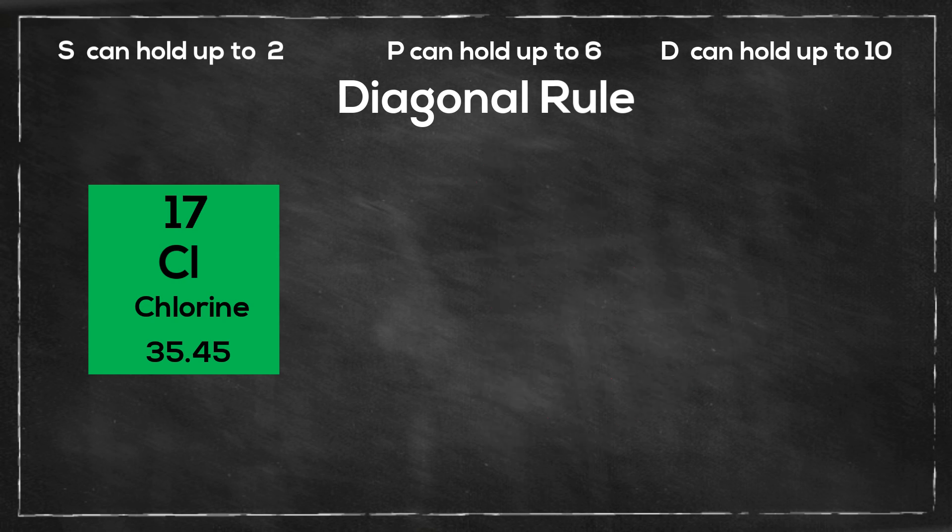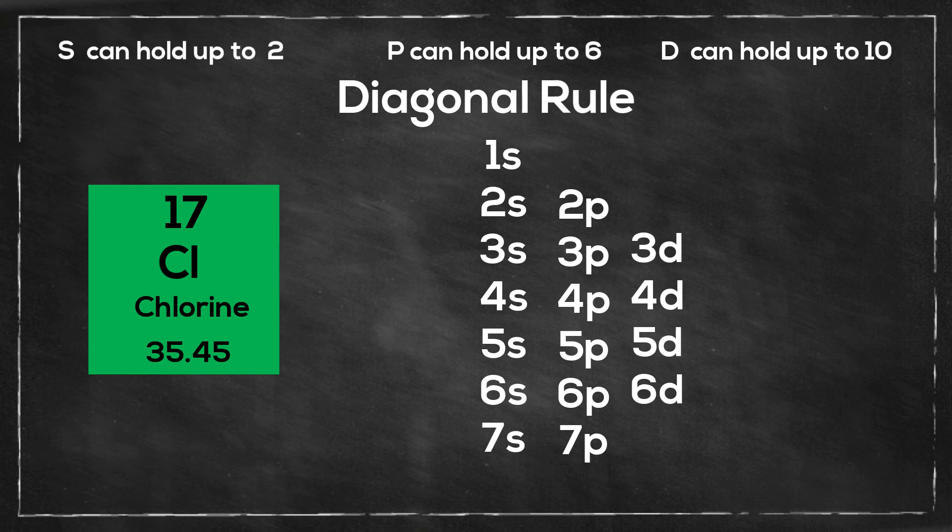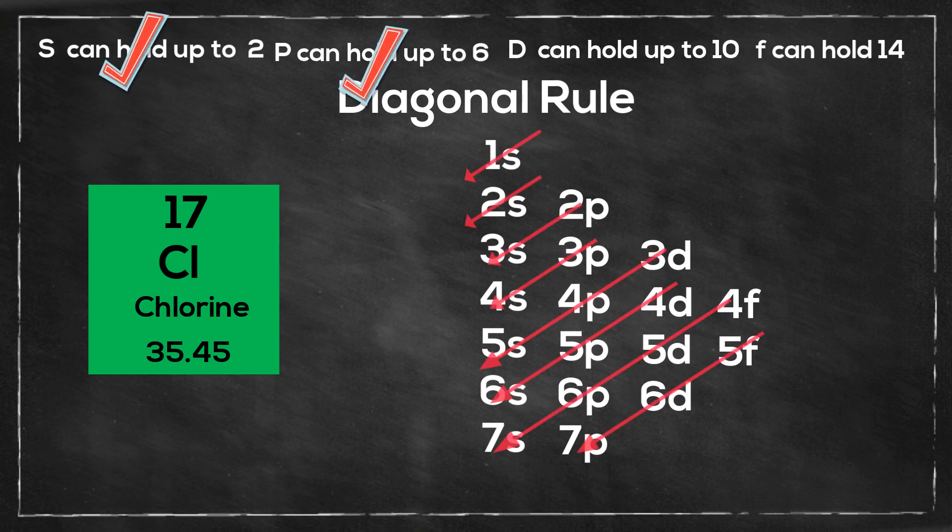Let's first draw our chart. I'll start with the s orbital and number 1 through 7, then the p orbitals, then the d orbitals, then the f orbitals. The s orbitals can hold up to 2, the p orbital up to 6, the d orbital up to 10, and the f orbital up to 14. Please notice that it goes up by 4 each time.